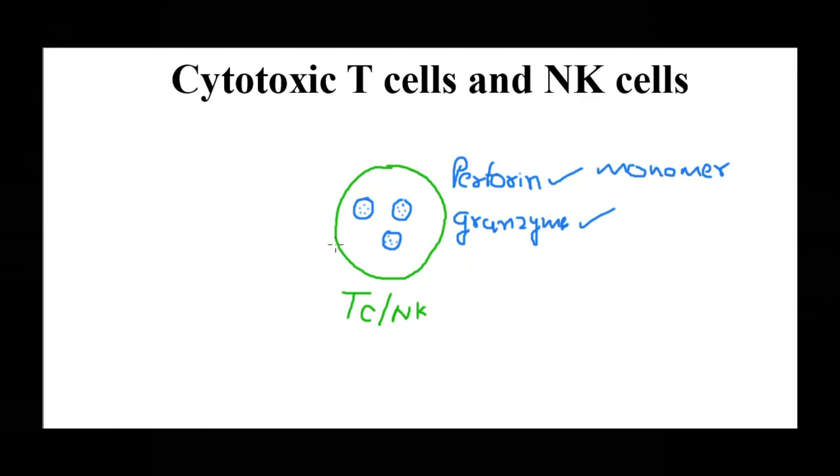Once these cells recognize cancer or virally infected cells, there will be exocytosis of these vesicles. This exocytosis happens when the cells get activated - after the recognition and binding between these two cells. Once the exocytosis of these granules happens, first the perforin, which is a pore-forming protein, inserts itself in the target cell membrane.